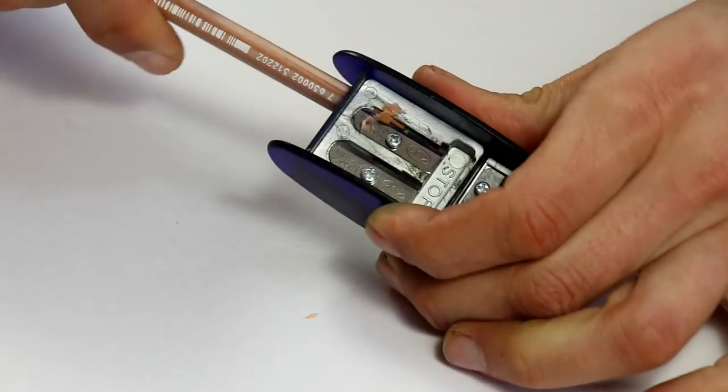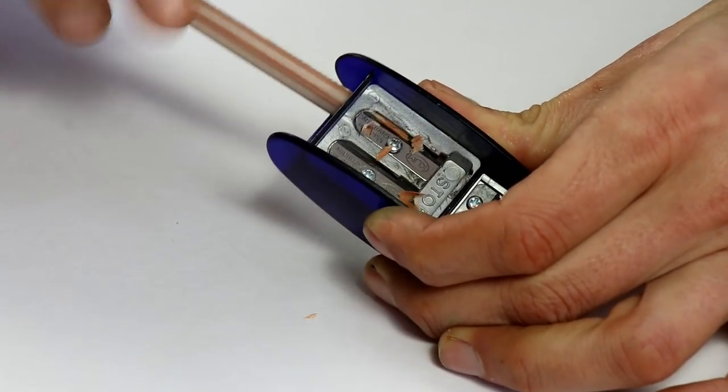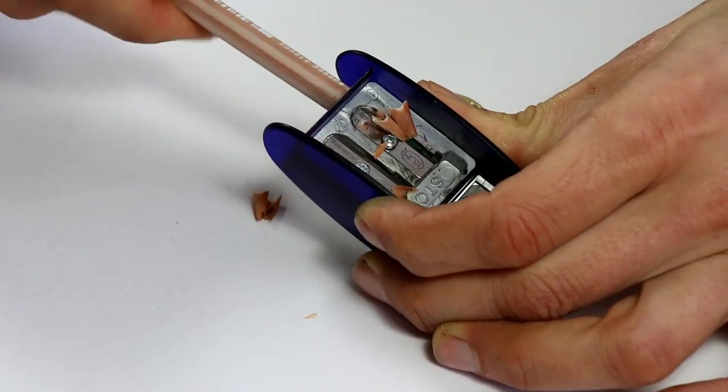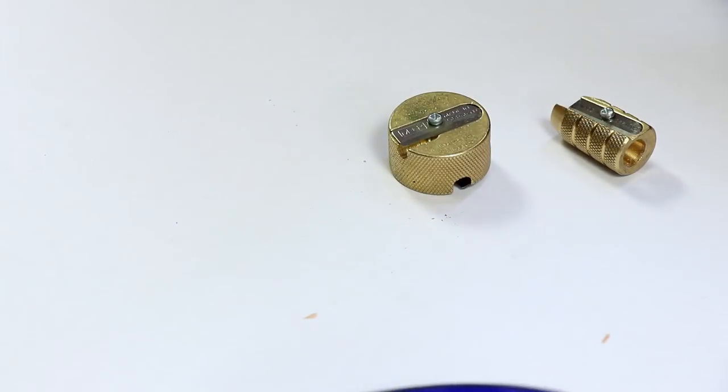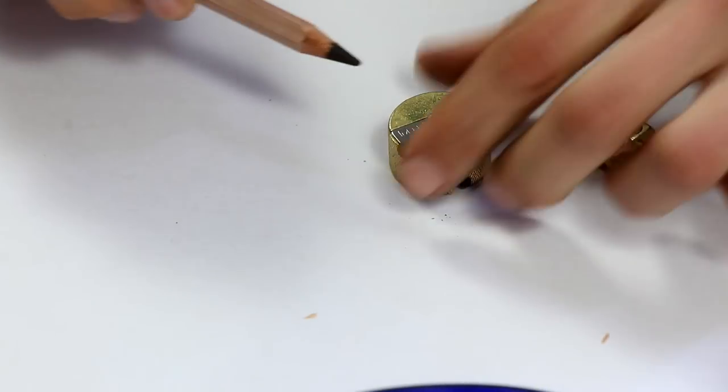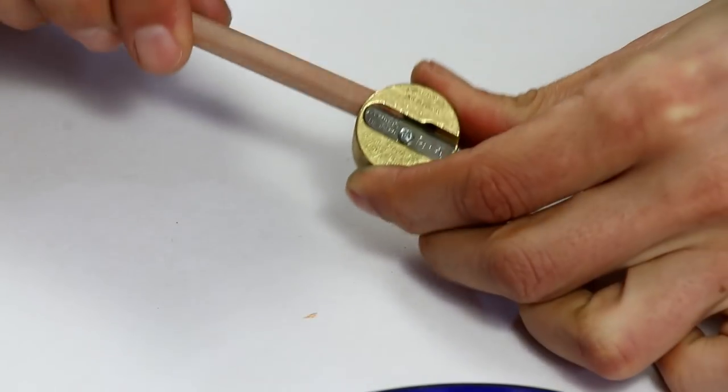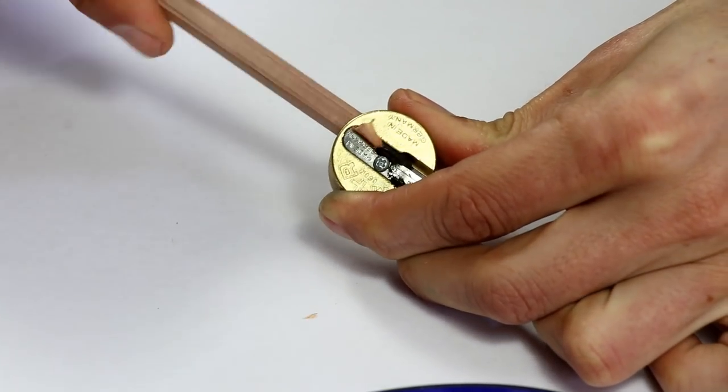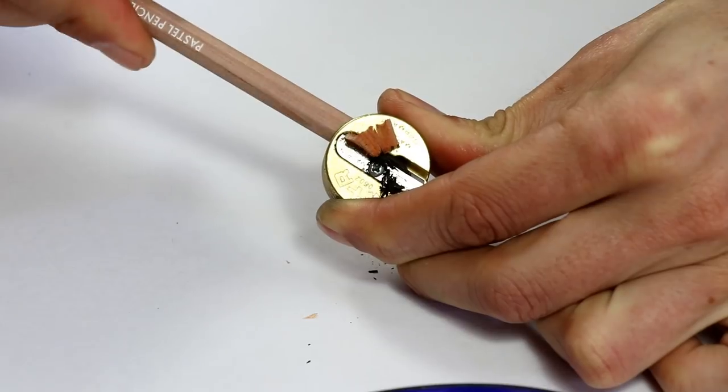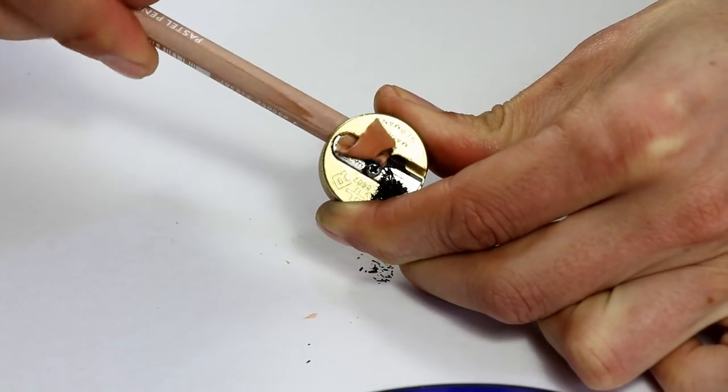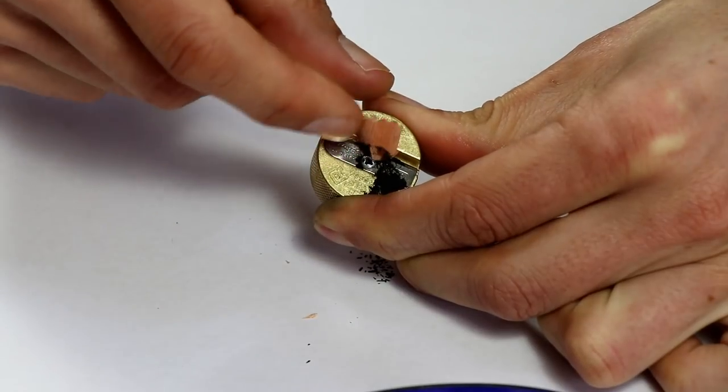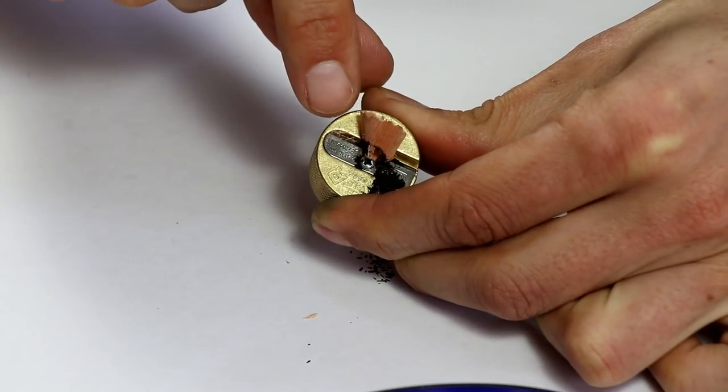This KUM one, it's a really good sharpener, works nice and well on the Caran d'Ache, no problems there. If I get another pencil, if I try this one as well, you can see that's very sharp, even sharper than the KUM one.